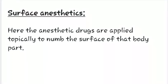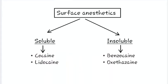Now let us study the second classification of local anaesthetics, i.e., surface anaesthetics. In surface anaesthetics, the drugs are applied topically to the nerve surface of that body part. Surface anaesthetics could be divided into two classes: first is soluble and second is insoluble.